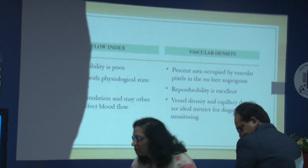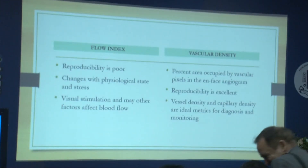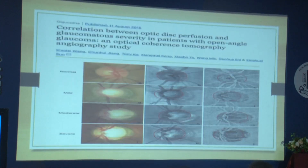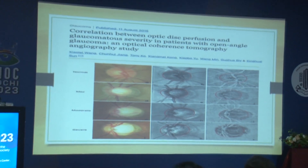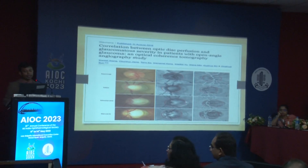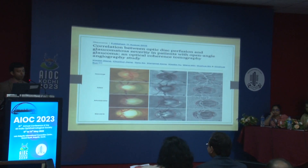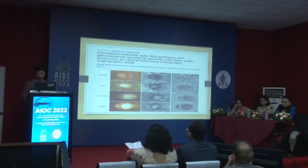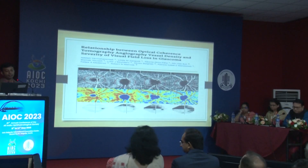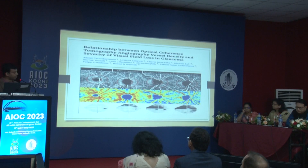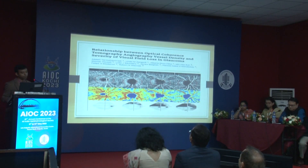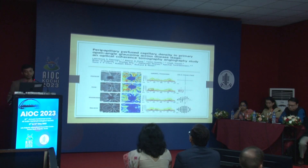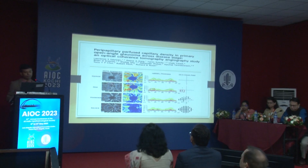There are many studies published on OCT angiography since 2014–2015. A study by Wang et al. has shown a significant decrease in vascular density from normal to severe glaucoma, correlating with disease progression. A paper by Mohammadi et al. showed that vascular density corresponds with visual field defects — the more severe the glaucoma, the lower the vascular density.